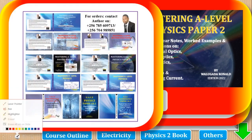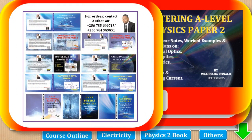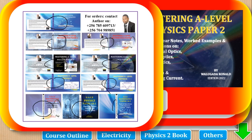For a complete set, physics paper 2 has three books: physics paper 1, physics paper 2, and the topical question bank. Also, if you do principal math, a complete set has three books: math paper 1, math paper 2, and a topical question bank. If you do subsidiary math, for example students doing PCB, you only need one book which is Mastering A-Level subsidiary math paper 1, since subsidiary math is only one paper.